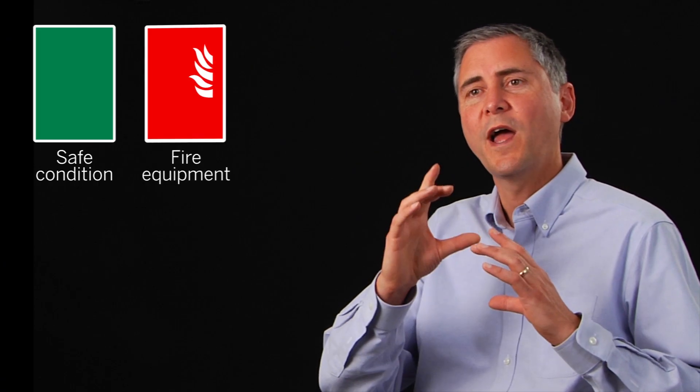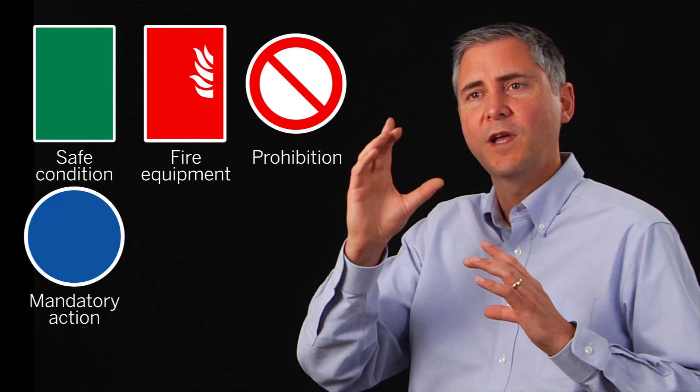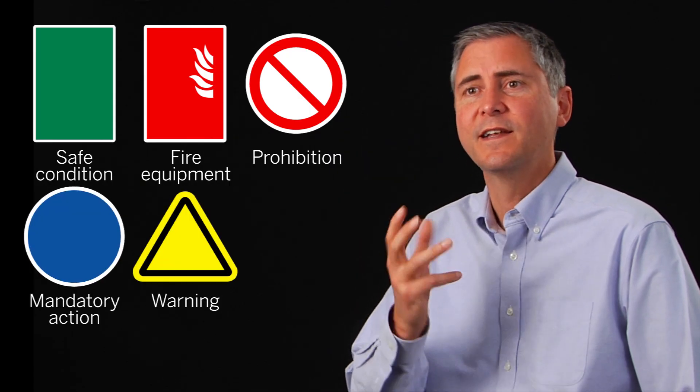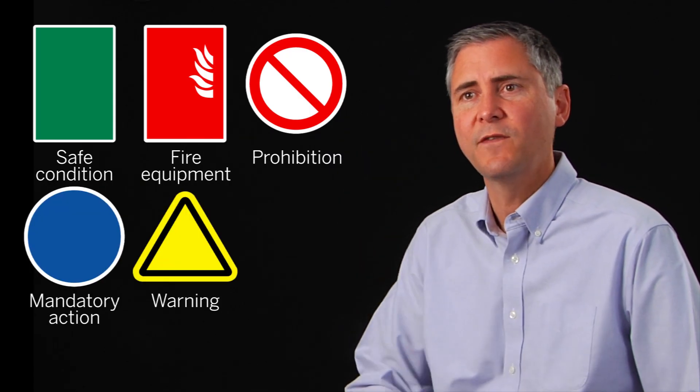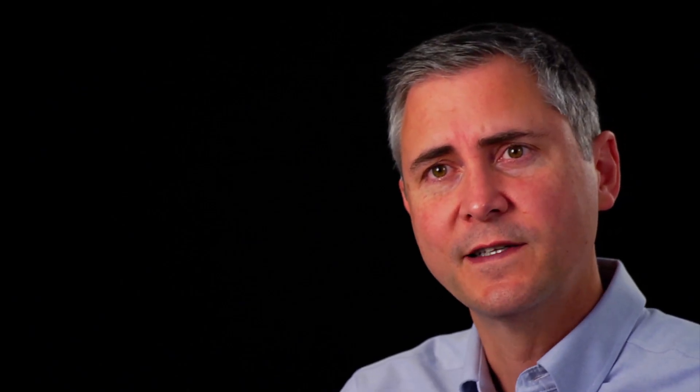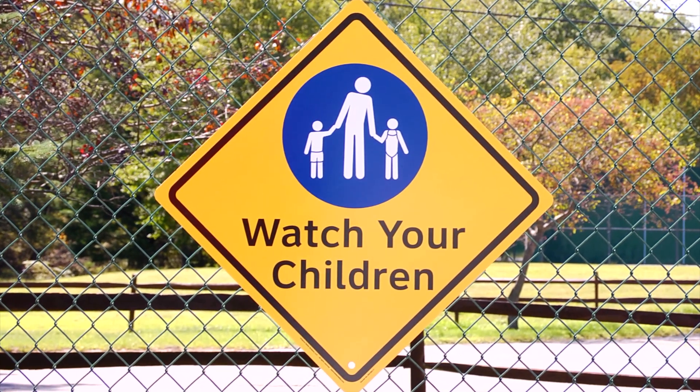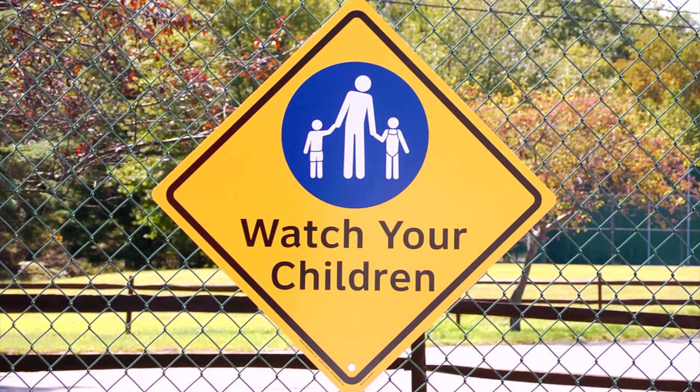So green, red, blue, yellow — in ISO they all indicate a different type of safety message. As you get closer to the sign, you'd see not just the color but the symbol, and the symbol would tell you the specific message. That's the vocabulary of how color is used in ISO.